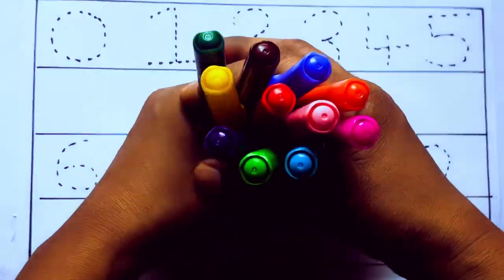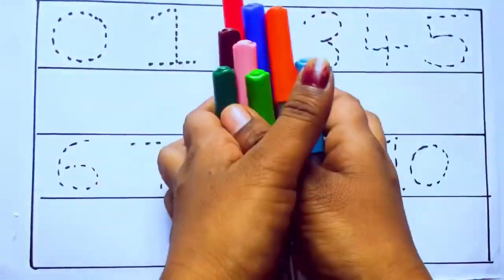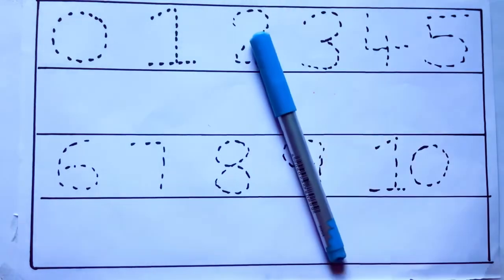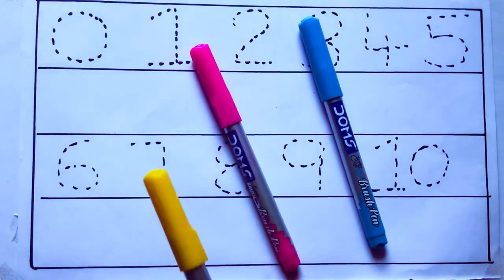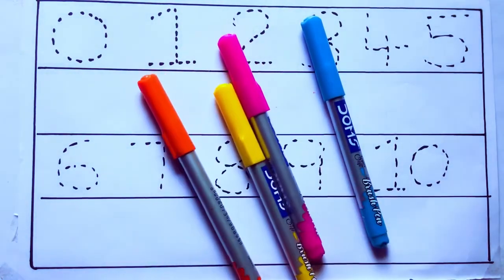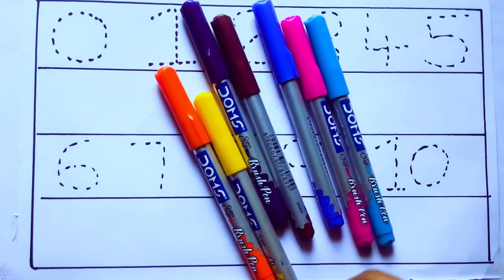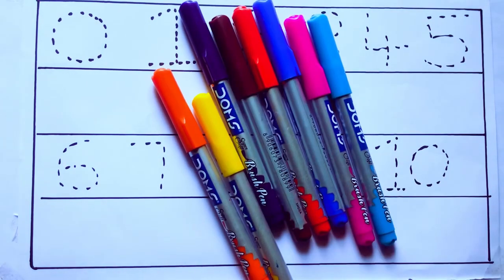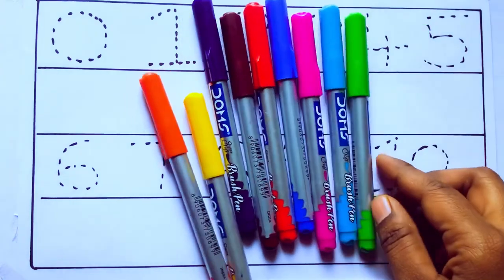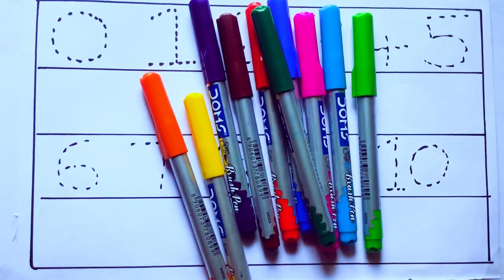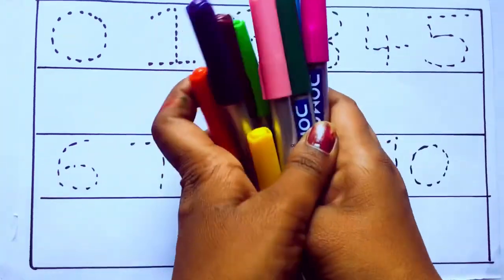Let's learn some colors. These are all the color pencils. Let's learn the names. Sky blue color, pink color, yellow color, orange color, violet color, blue color, brown color, red color, green color, and pink color.